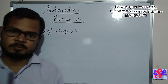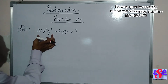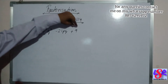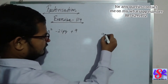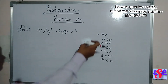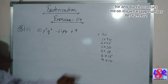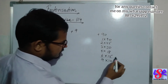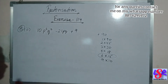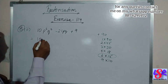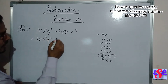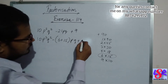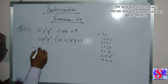Now let's go with question number 8. Here we are having 10p square q square minus 21pq plus 9. We are going to multiply 10 by 9 to get 90. We have plus 90 and the product is positive, so we add any two factors to get 21. We find that 6 plus 15 equals 21. So we split this as 10p square q square minus 6pq plus 15pq plus 9, and open the bracket.